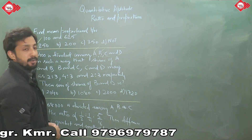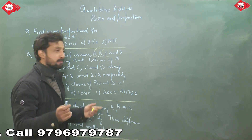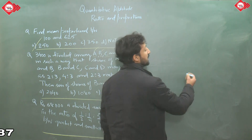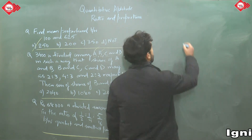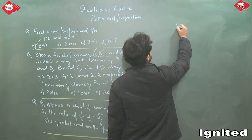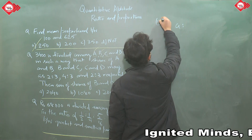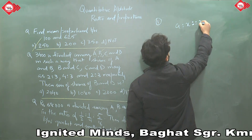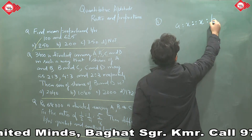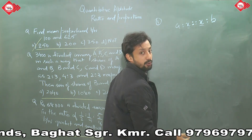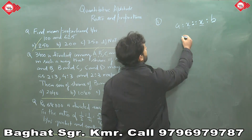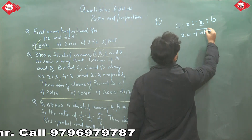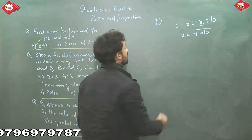The first question asks: find the mean proportional between 106 and 25. As I said yesterday, if you have a mean proportional between two numbers, written as a is to x as x is to b, this equality means x is equivalent to the square root of a times b. So x equals the square root of a·b.